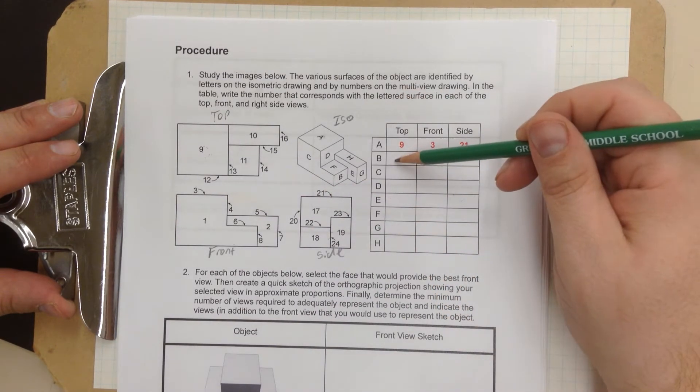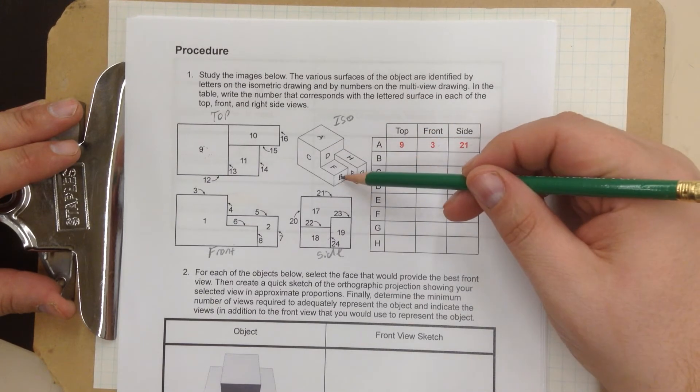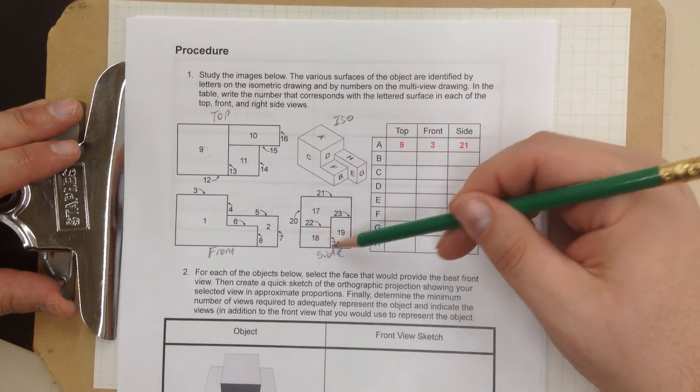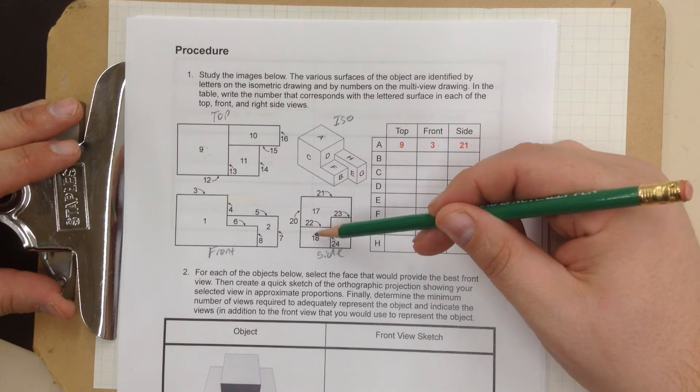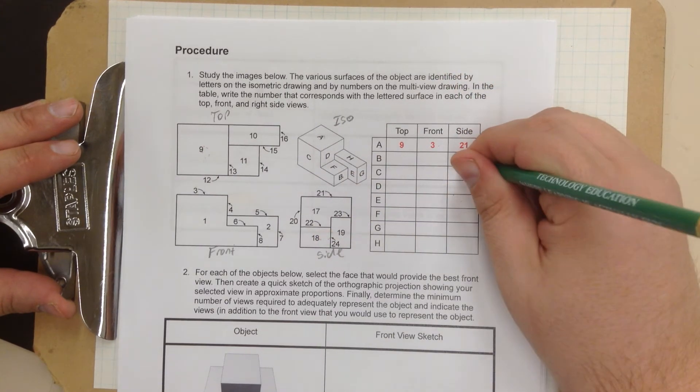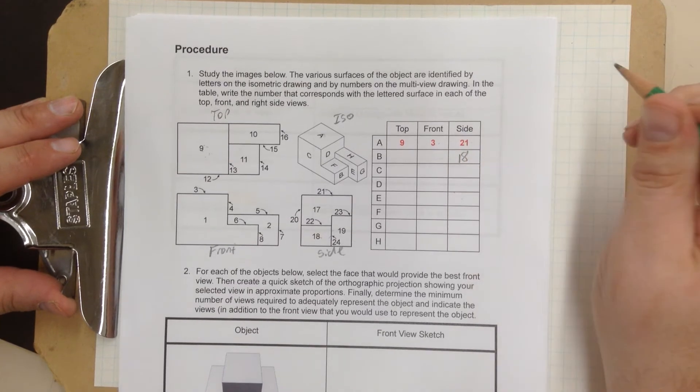Now let's try out number B. Letter B, as it were. That is right there. Okay? If I look at the side view, right here, there's B. Number 18 is going to be the side. So I'm going to write 18 right there.